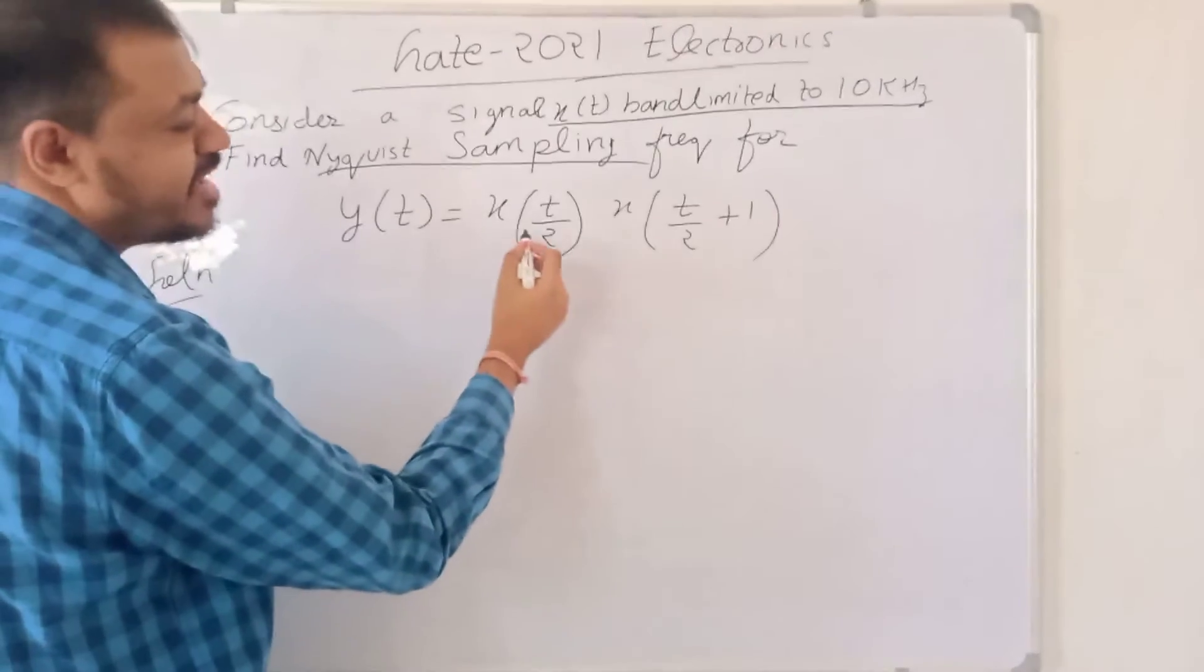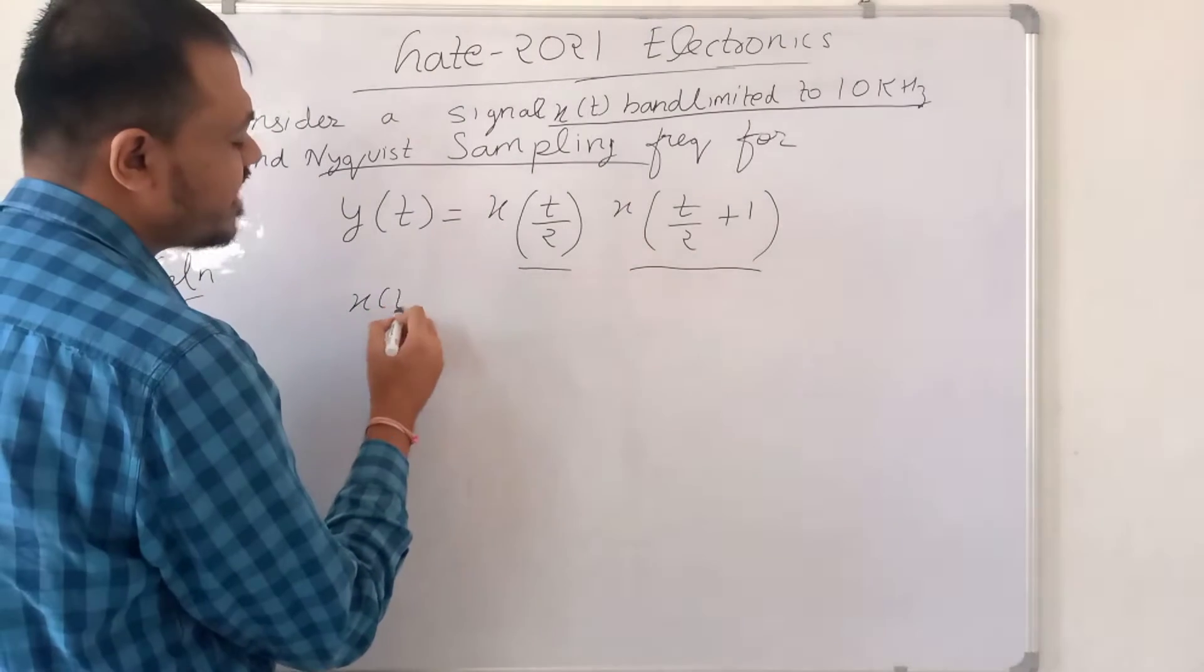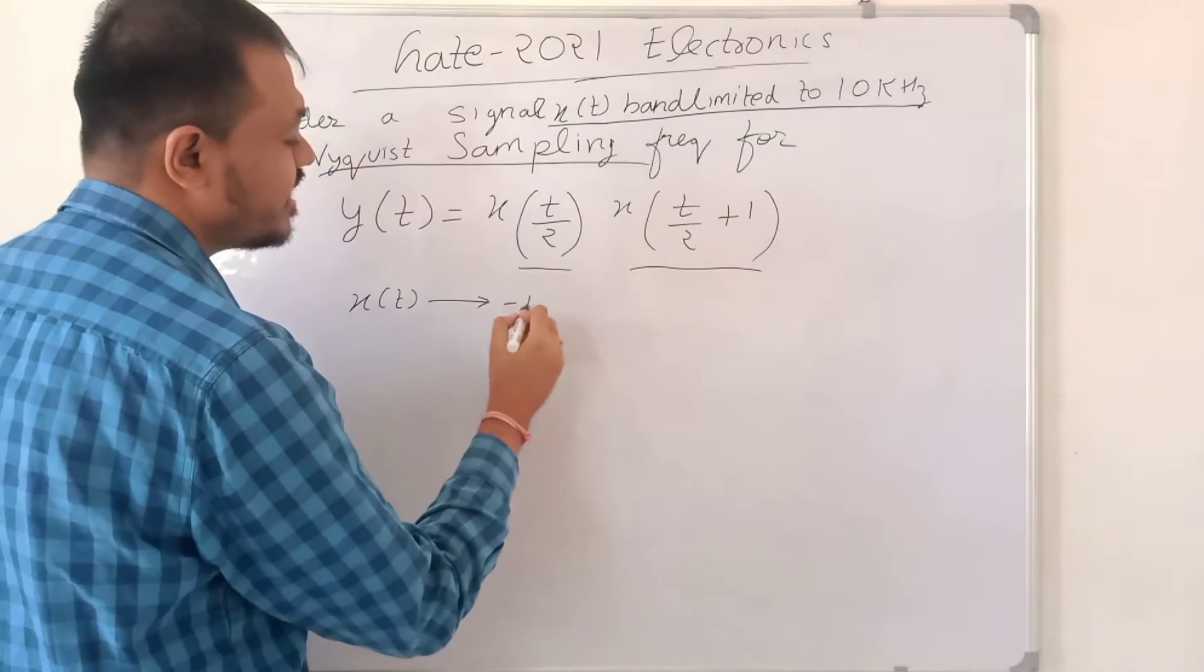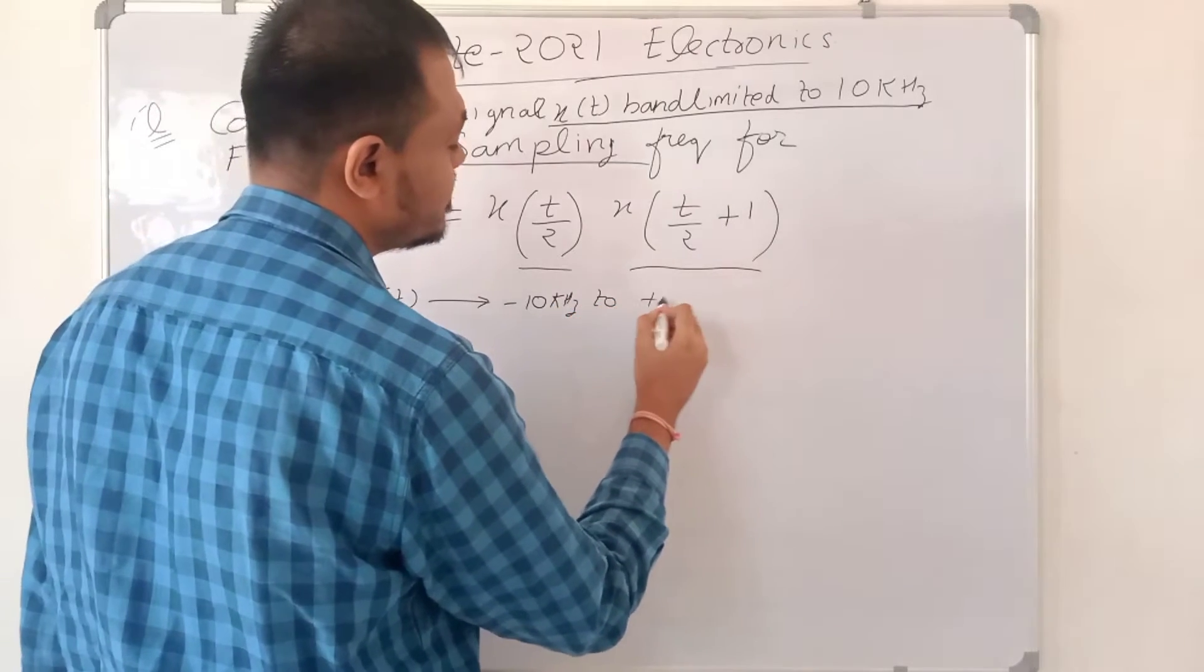Y(t) is the multiplication of X(t/2) and (X(t/2) + 1). So X(t) exists from minus 10 kHz to plus 10 kHz.